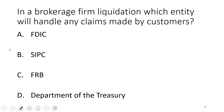If a broker-dealer is liquidated, the entity that handles customer claims is SIPC — the Securities Investor Protection Corporation. In the late 1960s, many broker-dealers were shut down and customer assets couldn't be found. SIPC was created to provide customer protection — similar to FDIC for banks. The Securities Investor Protection Corporation covers customers for up to $500,000.